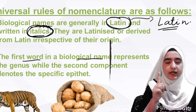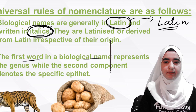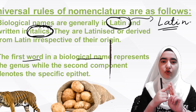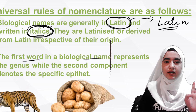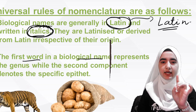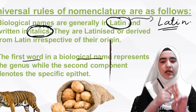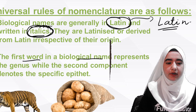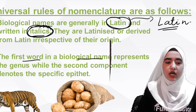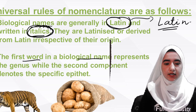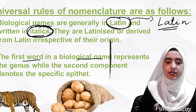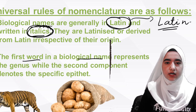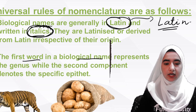The first term in a biological name represents the genus and the second component is the specific epithet. For example, the scientific name of tiger is Panthera tigris — Panthera is the genus and tigris is the specific epithet. Another example is Solanum tuberosum — Solanum is the generic name and tuberosum is the specific epithet.